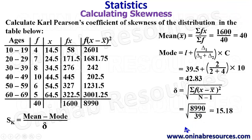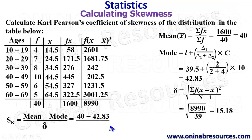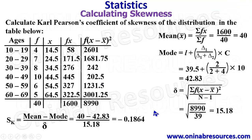Putting this in our calculator, we have the standard deviation equal to 15.18. We then substitute into the formula for calculating Karl Pearson's coefficient of skewness. Our mean is 40, so we have 40 minus our mode of 42.83, divided by our standard deviation of 15.18. Putting this in our calculator, we have negative 0.1864, which represents the Karl Pearson's coefficient of skewness of the distribution — a negatively skewed distribution.